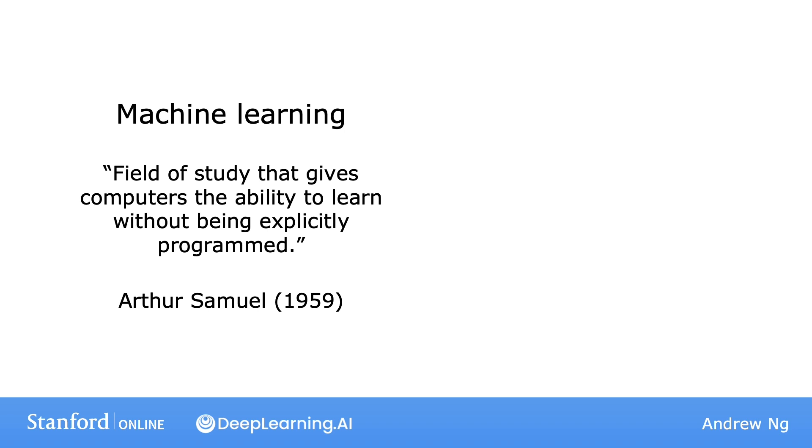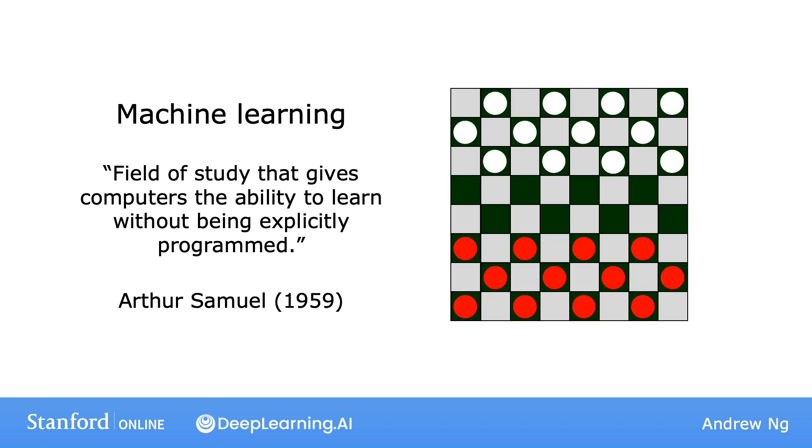Samuel's claim to fame was that back in the 1950s he wrote a checkers playing program. The amazing thing about this program was that Arthur Samuel himself wasn't a very good checkers player. What he did was he had programmed a computer to play maybe tens of thousands of games against itself, and by watching what sorts of board positions tended to lead to wins and what positions tended to lead to losses, the checkers playing program learned over time whether positions were good or bad.